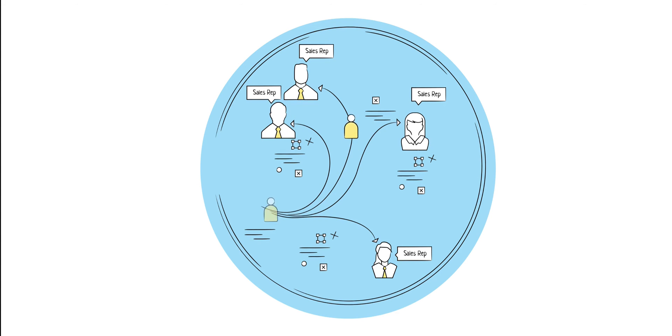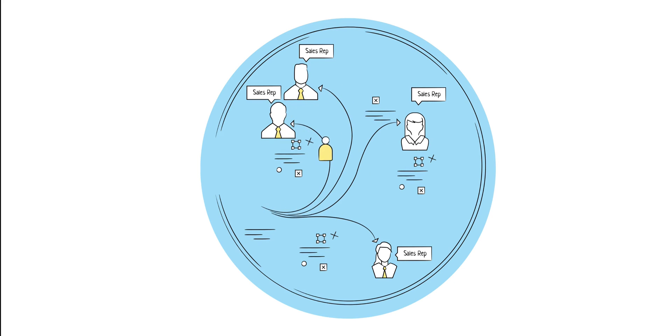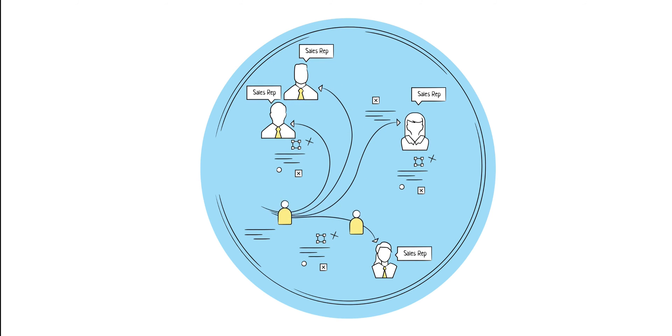We have seen how you can prioritize your leads. Let us now look at how you can distribute them amongst your sales representatives. The usual practice is to assign the best leads to the top sales representatives. Here's how you can automatically assign leads based on any criteria you choose, such as score, source, industry, and revenue.